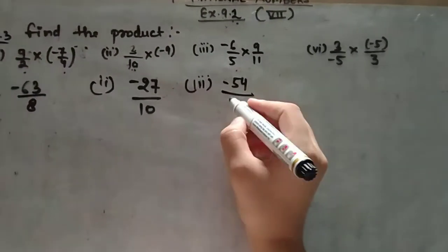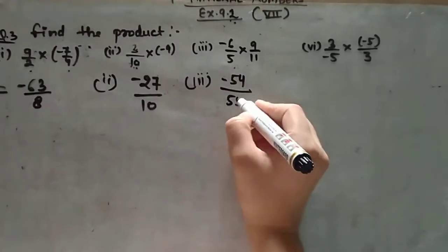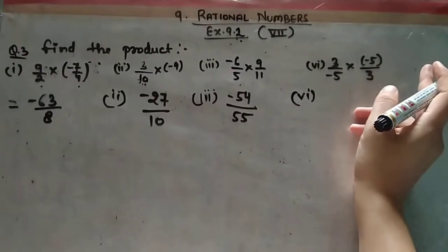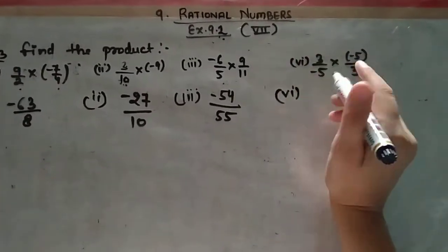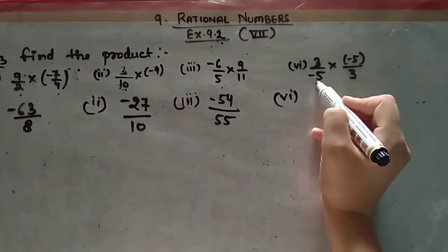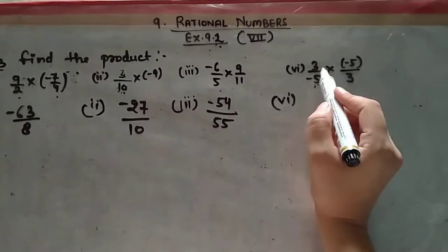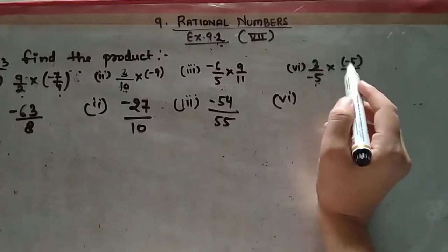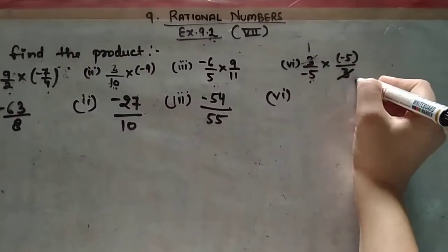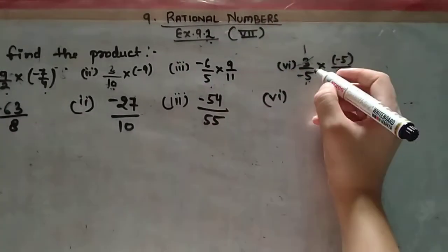Now moving to the sixth part. Let's check what we can cancel. The numerator and denominator - 5 doesn't divide evenly here, but 3 is in both numerator and denominator. So 3 and 3 cancel. Also, 5 and 5 cancel.